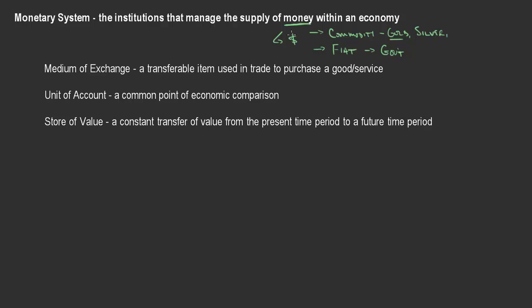There are a few reasons that is very important. First, when we think about what money is, money must first and foremost be a medium of exchange — a transferable item that's used in trade to purchase a good or service. Over the history of human civilization, we have had different types of money: money has been fish, it has been stones, it has been actual blocks of gold, it has been silver coins, and it has been dollar bills that are not backed by anything. The important part of a medium of exchange is that it must be transferable and accepted by individuals. That transferability is an incredibly important part of what makes money viable within an economy.